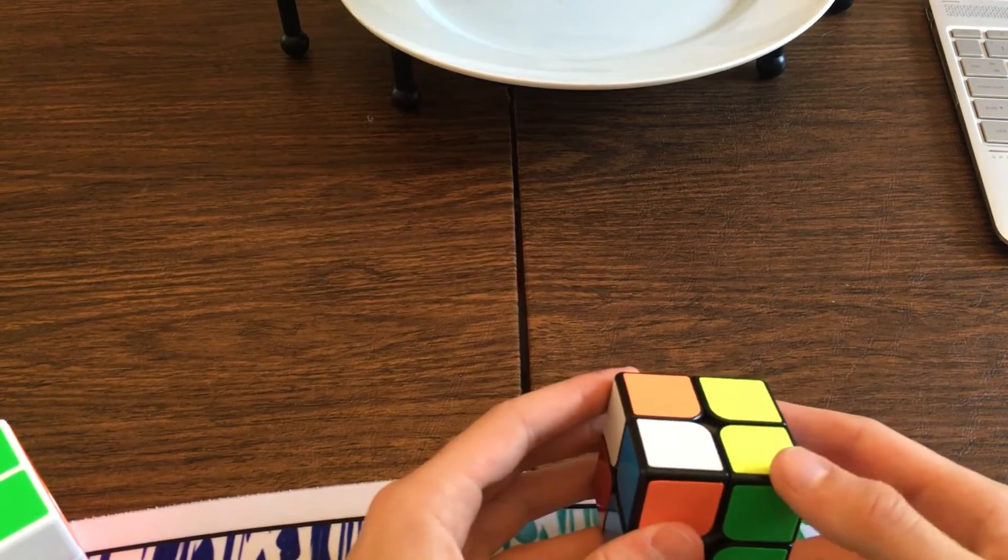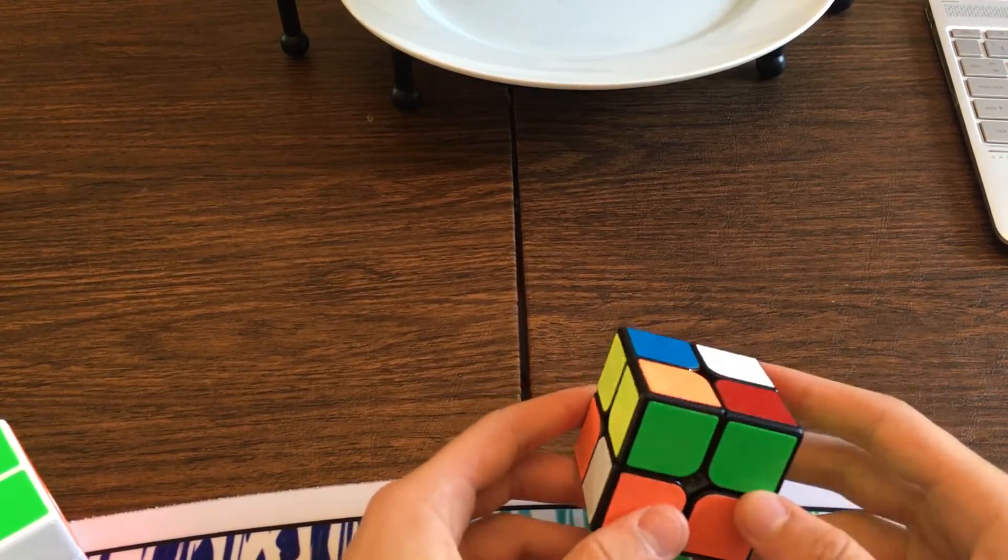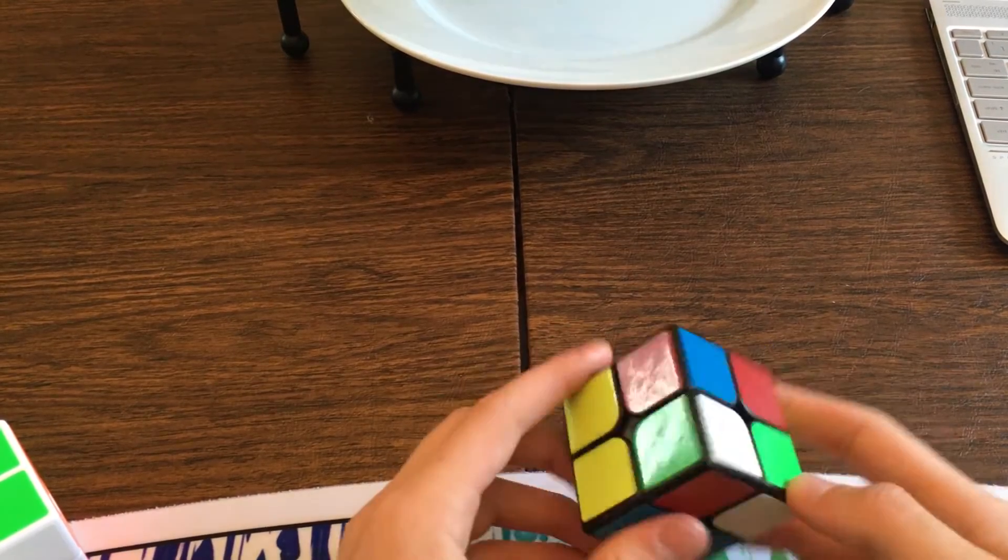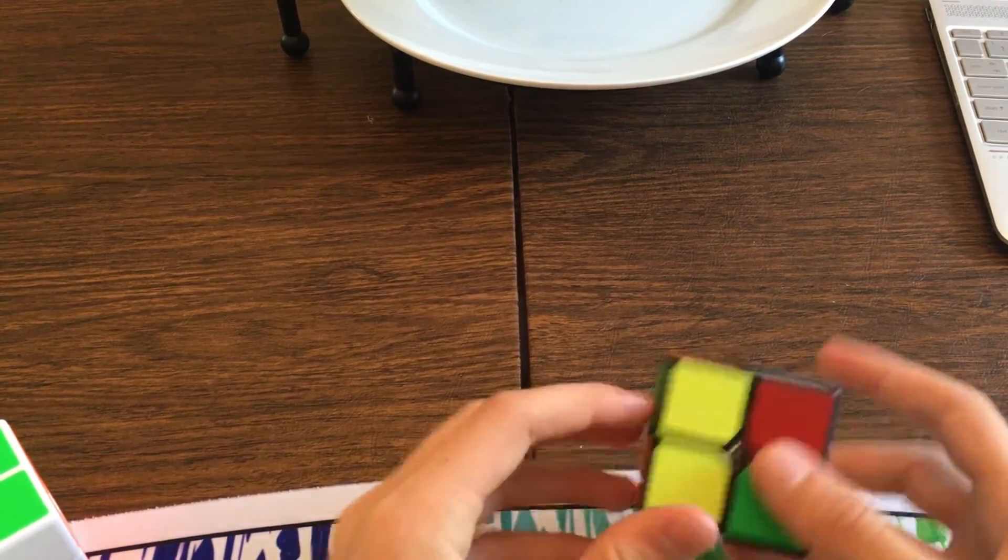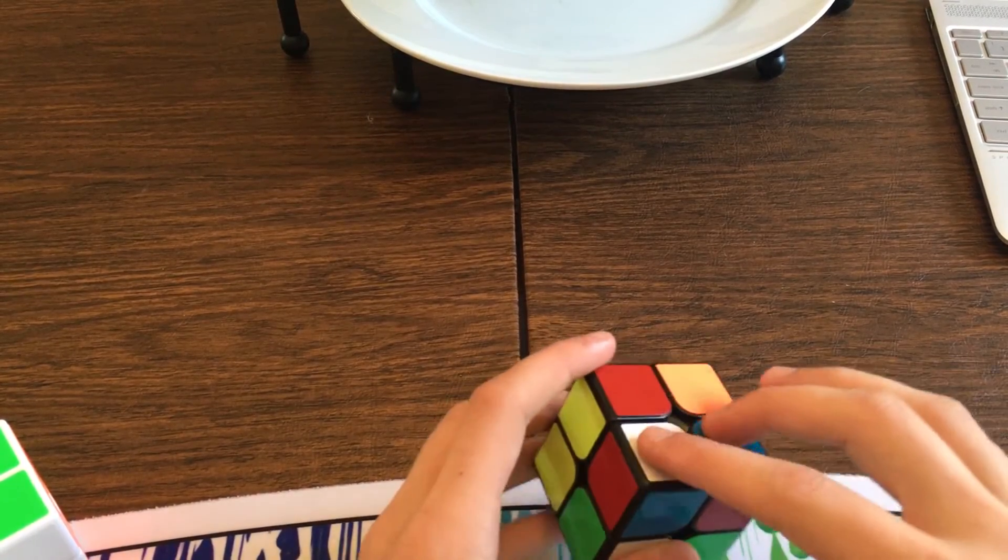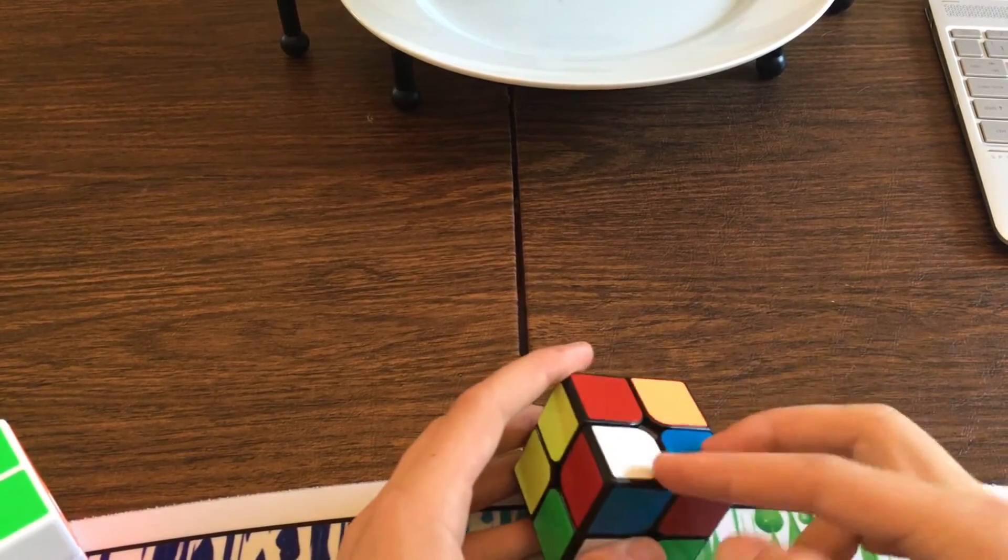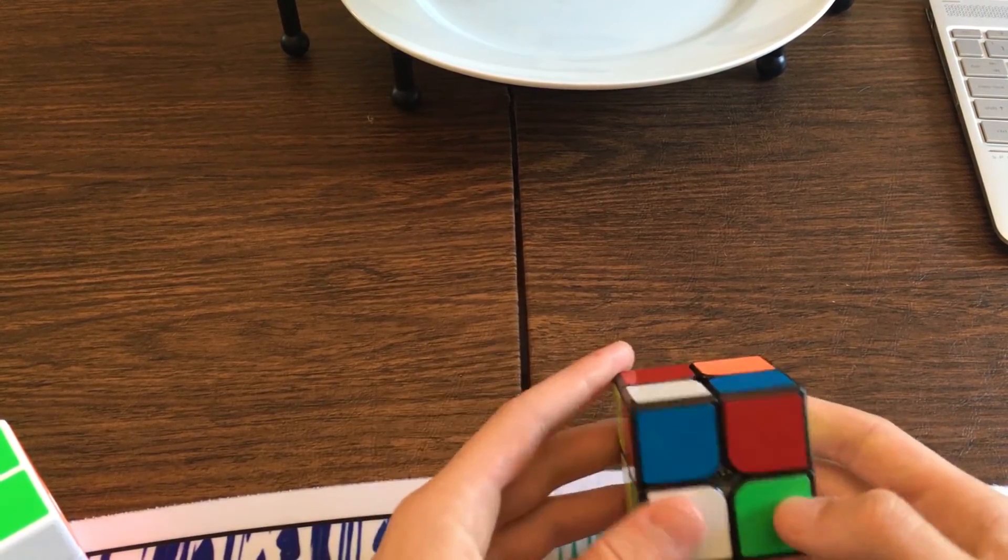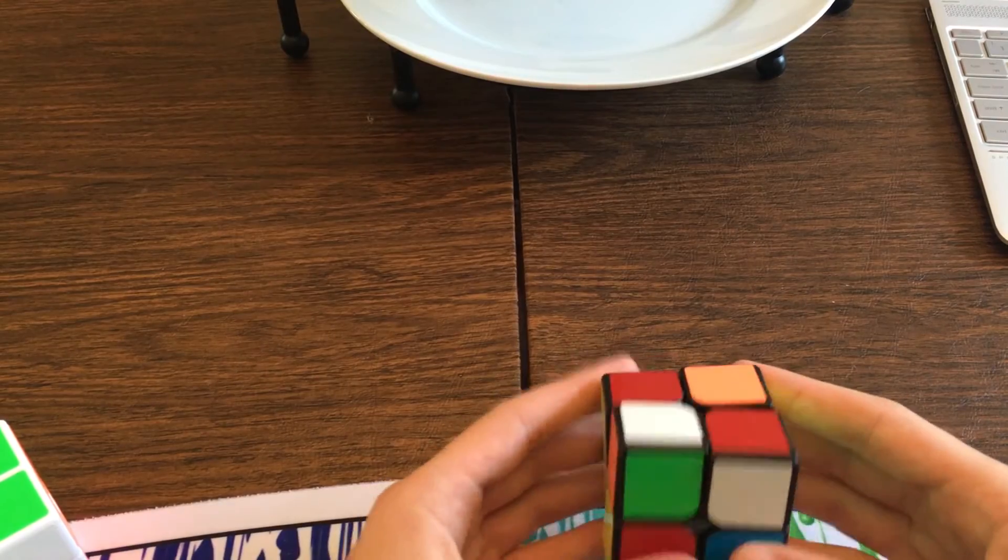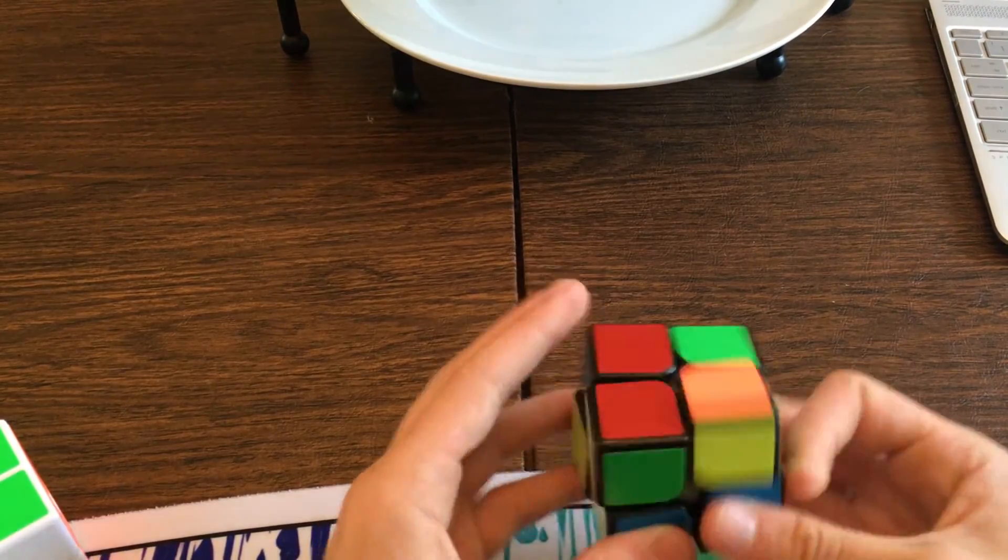So for this last one here, it's just a one-move TCLL layer where you have this bar already made here, and then here it's kind of like another bar for CLL, but it's for TCLL since they're connected and one of them's twisted. So just F2 down and then finish off the algorithm like that.